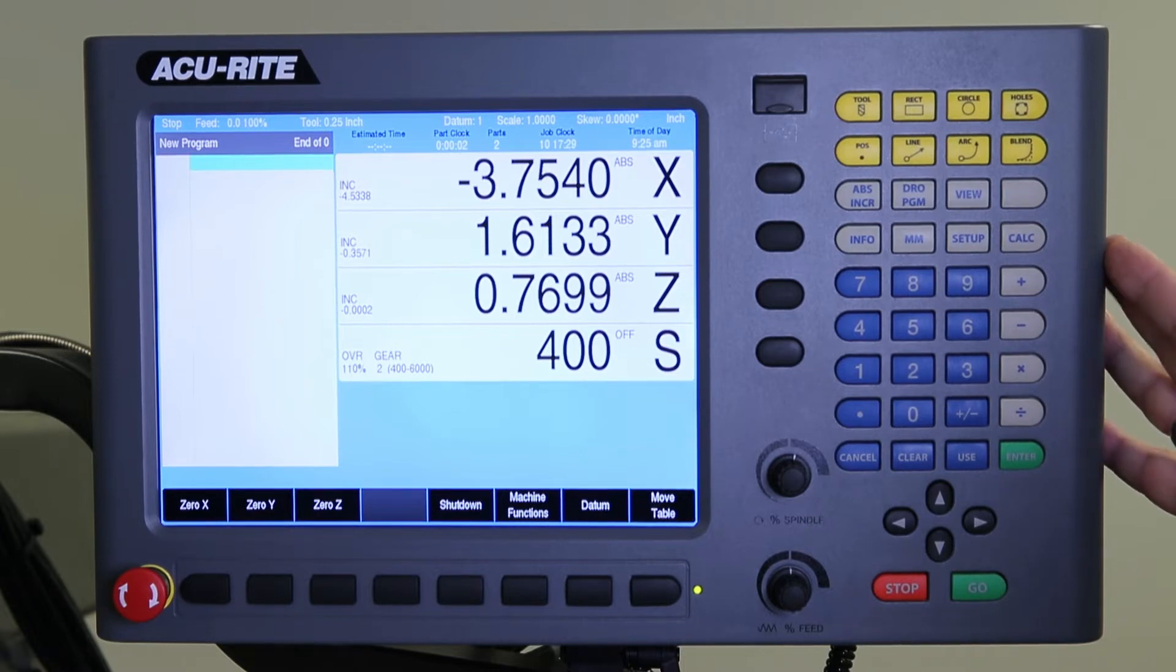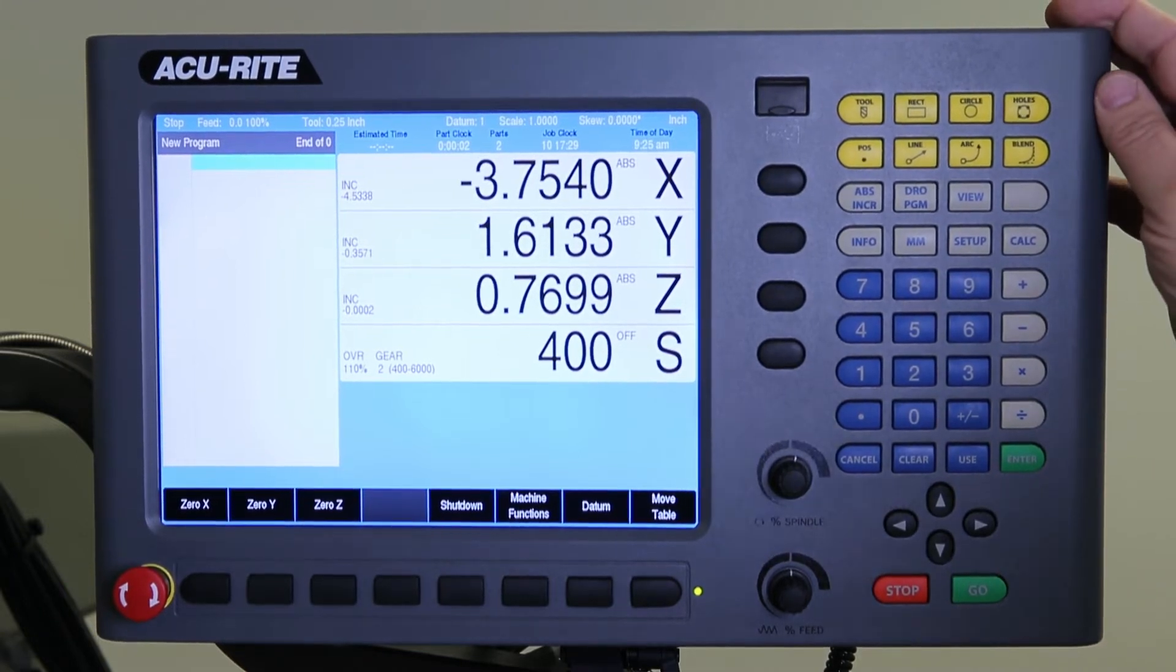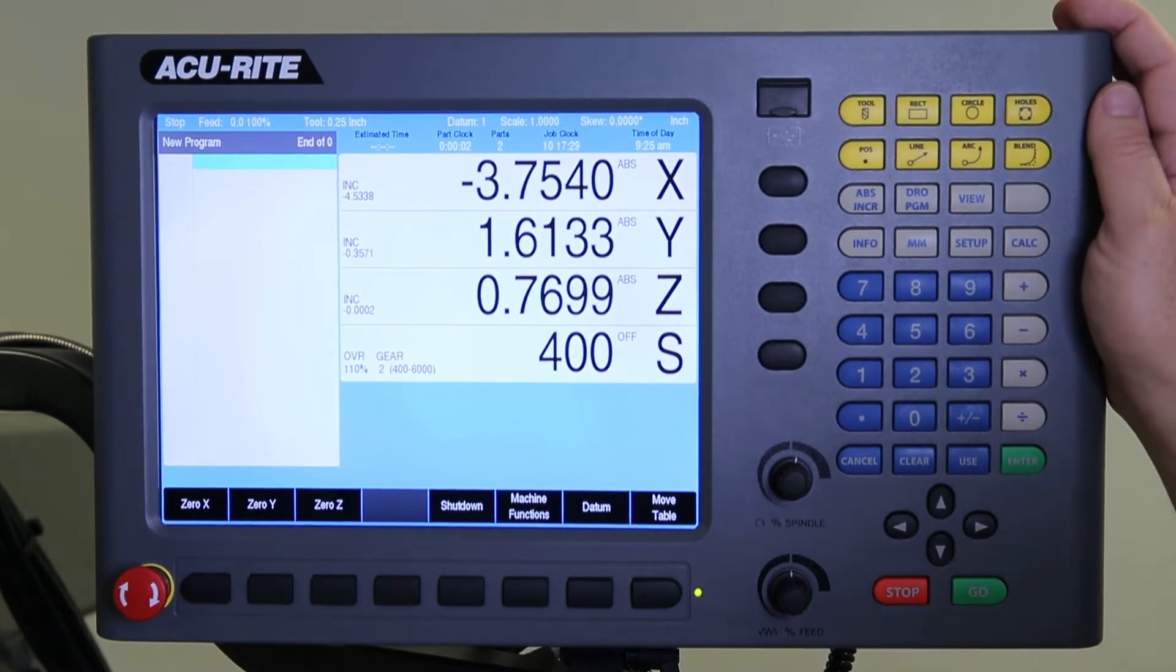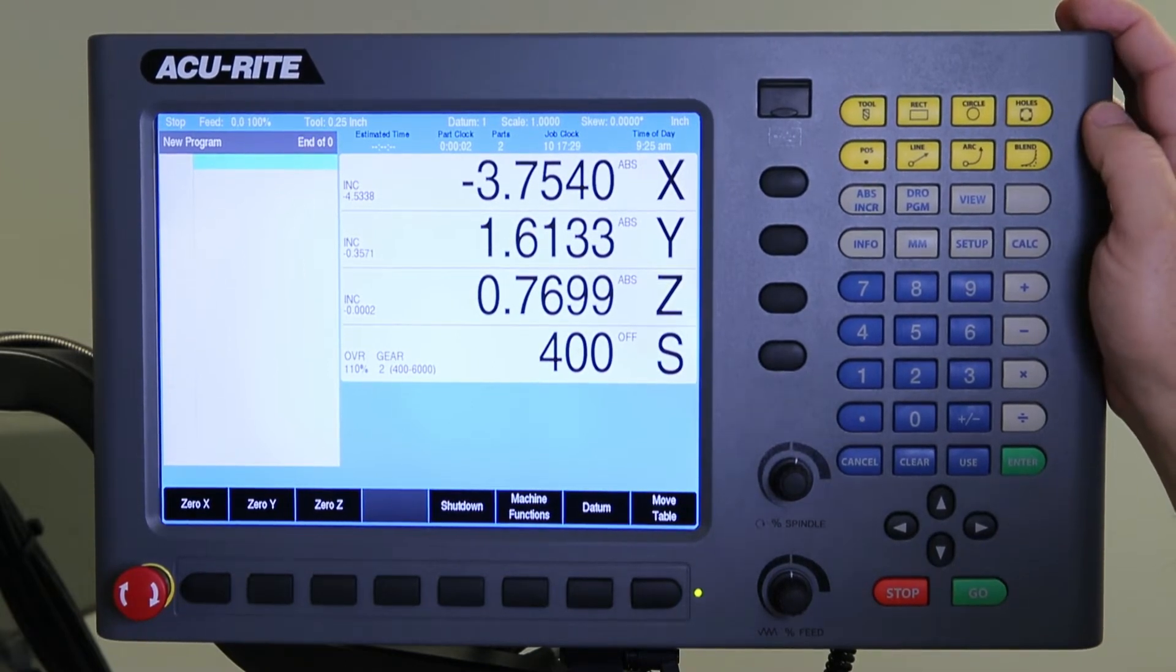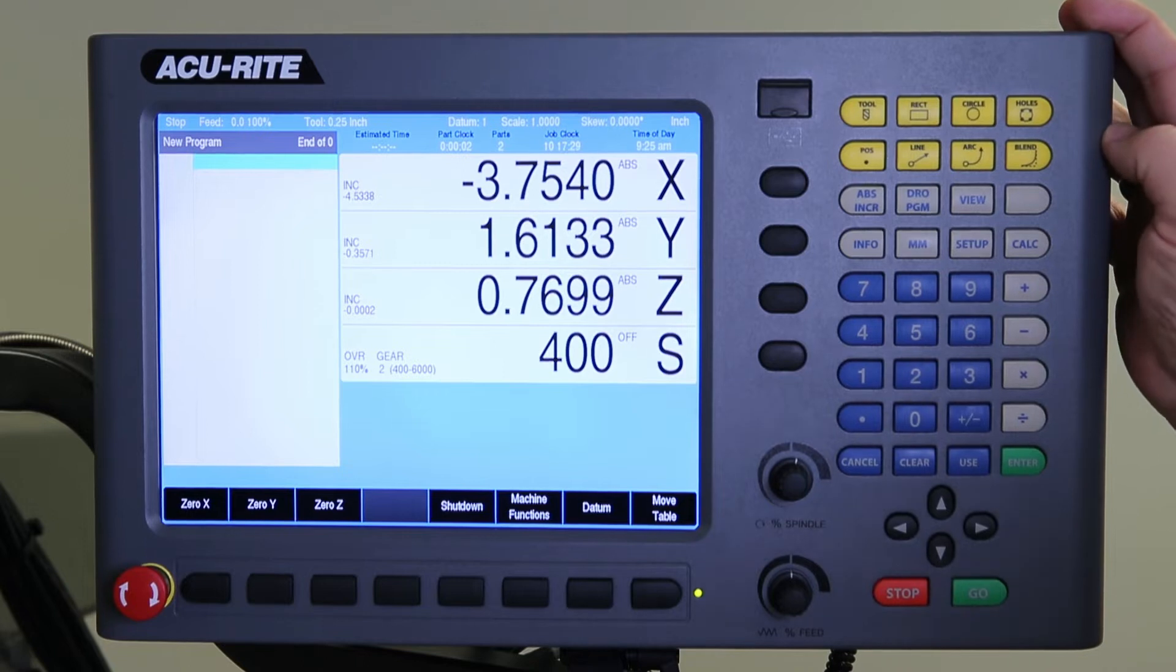And for bed mills it's more of an electronics package where the machine itself has ball screws already built into the bed mill and we're supplying the motors, drives, linear feedback as an option, a remote hand wheel, and the control console itself.